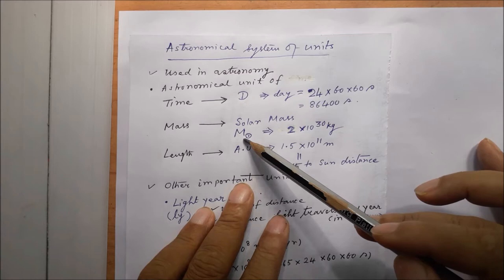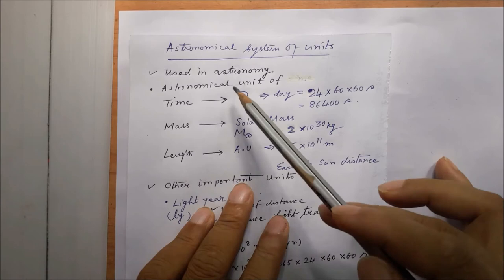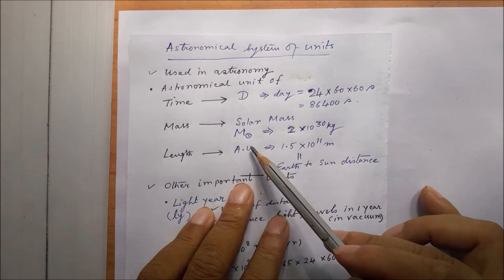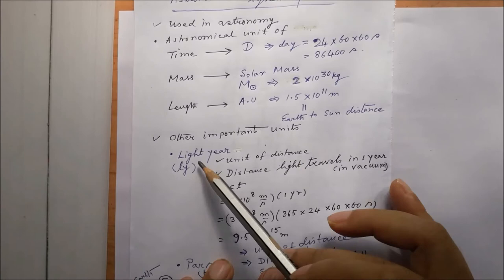The astronomical unit of mass is called solar mass, sometimes denoted by the symbol M with a circle-dot subscript, and its value is approximately 2 times 10 to the power 30 kg. The unit of length used in the astronomical system is taken to be the distance between Earth and Sun, which has a value of 1.5 times 10 raised to the power 11 meters, and it is called one astronomical unit (AU).